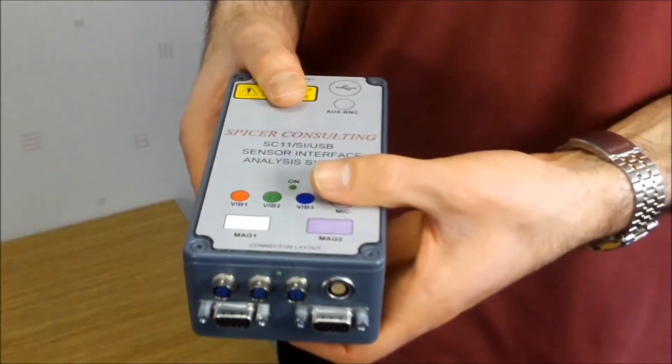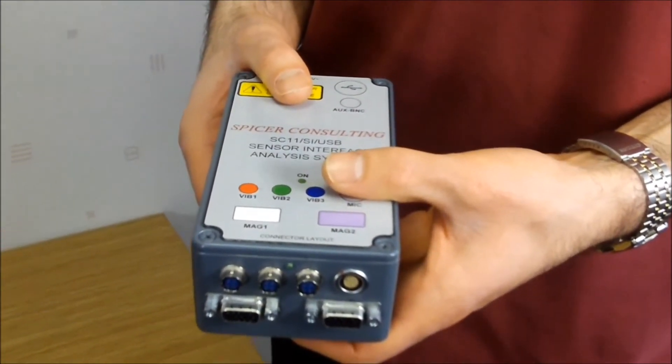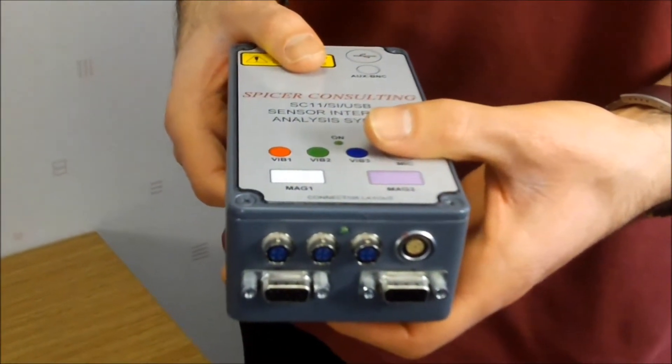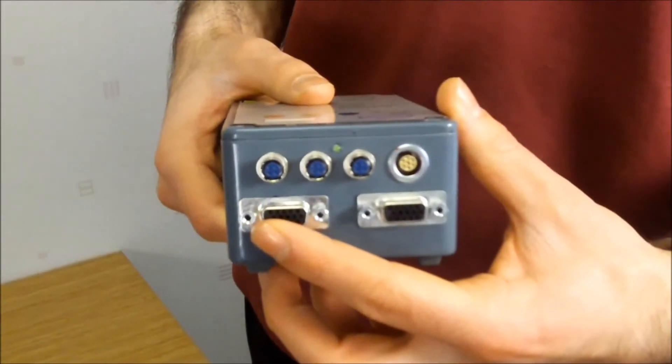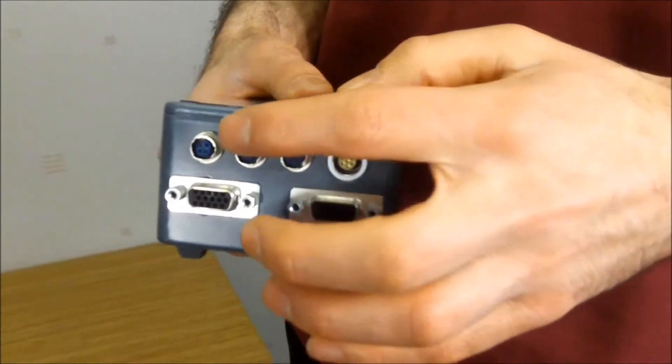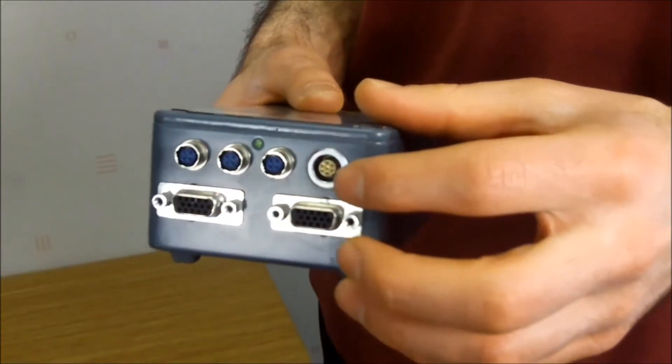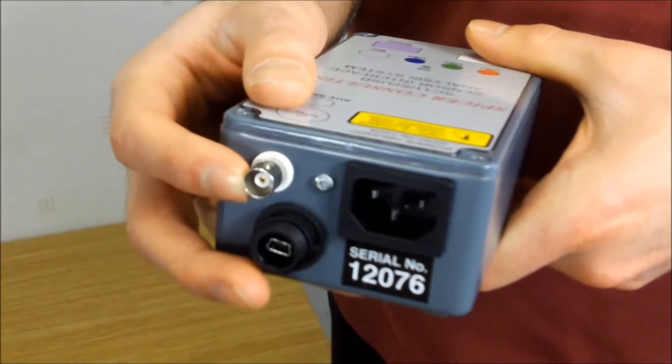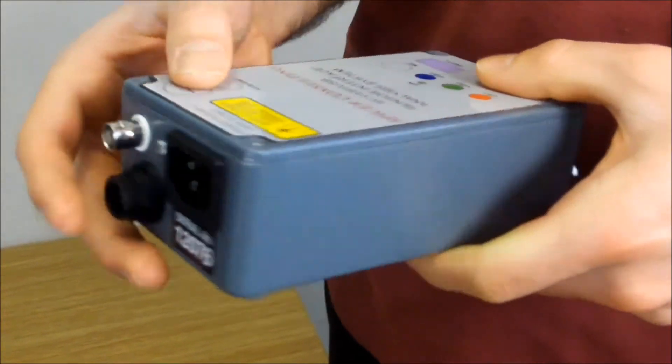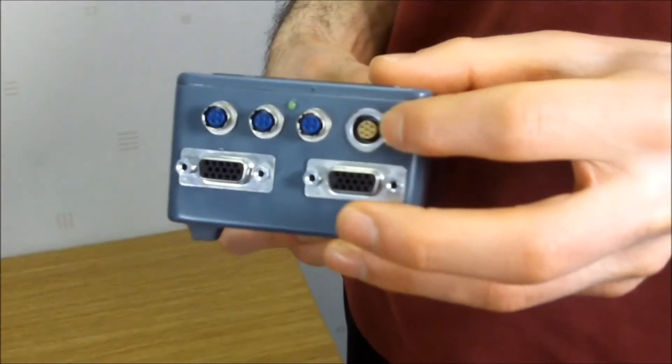Here is the sensor interface. This is the hub of the SC11SI system. All of the sensors plug into this device. It has ports for two magnetic field sensors as well as three vibration sensors. There is also a general purpose DC auxiliary input via a BNC connector at the back of the interface and a microphone sensor input port as well.